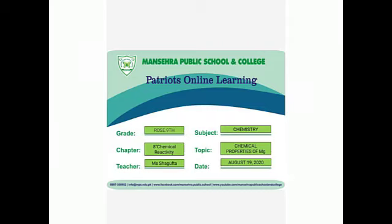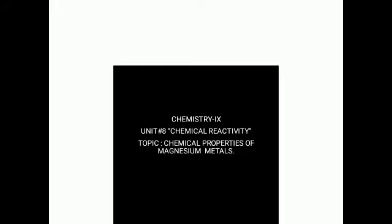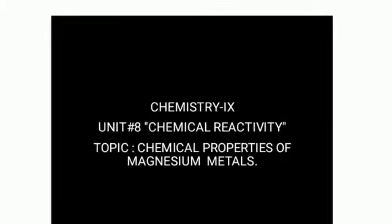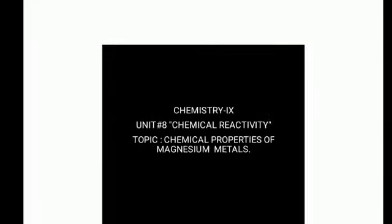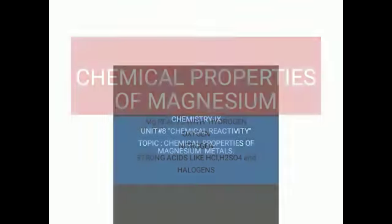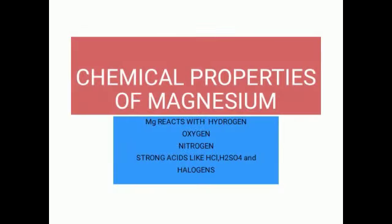Bismillahirrahmanirrahim. Assalamualaikum dear students. Today we are going to discuss our next topic from chapter number 8, chemical reactivity, and the topic is chemical properties of magnesium metal. Chemical properties of magnesium — generally اگر ہم دیکھیں تو اس کے reactions ہم دیکھ سکتے ہیں oxygen کے ساتھ، nitrogen کے ساتھ، strong acids like hydrochloric acid, sulfuric acid and halogens.